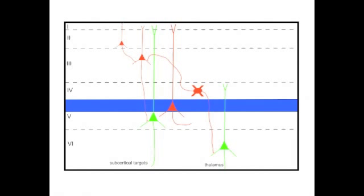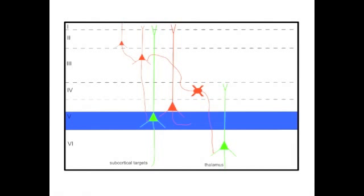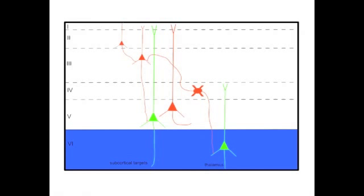Layer 5 can be divided into two sublayers, with layer 5a making intracortical connections, and layer 5b projecting to subcortical structures. And finally, layer 6 neurons primarily project to the thalamus.